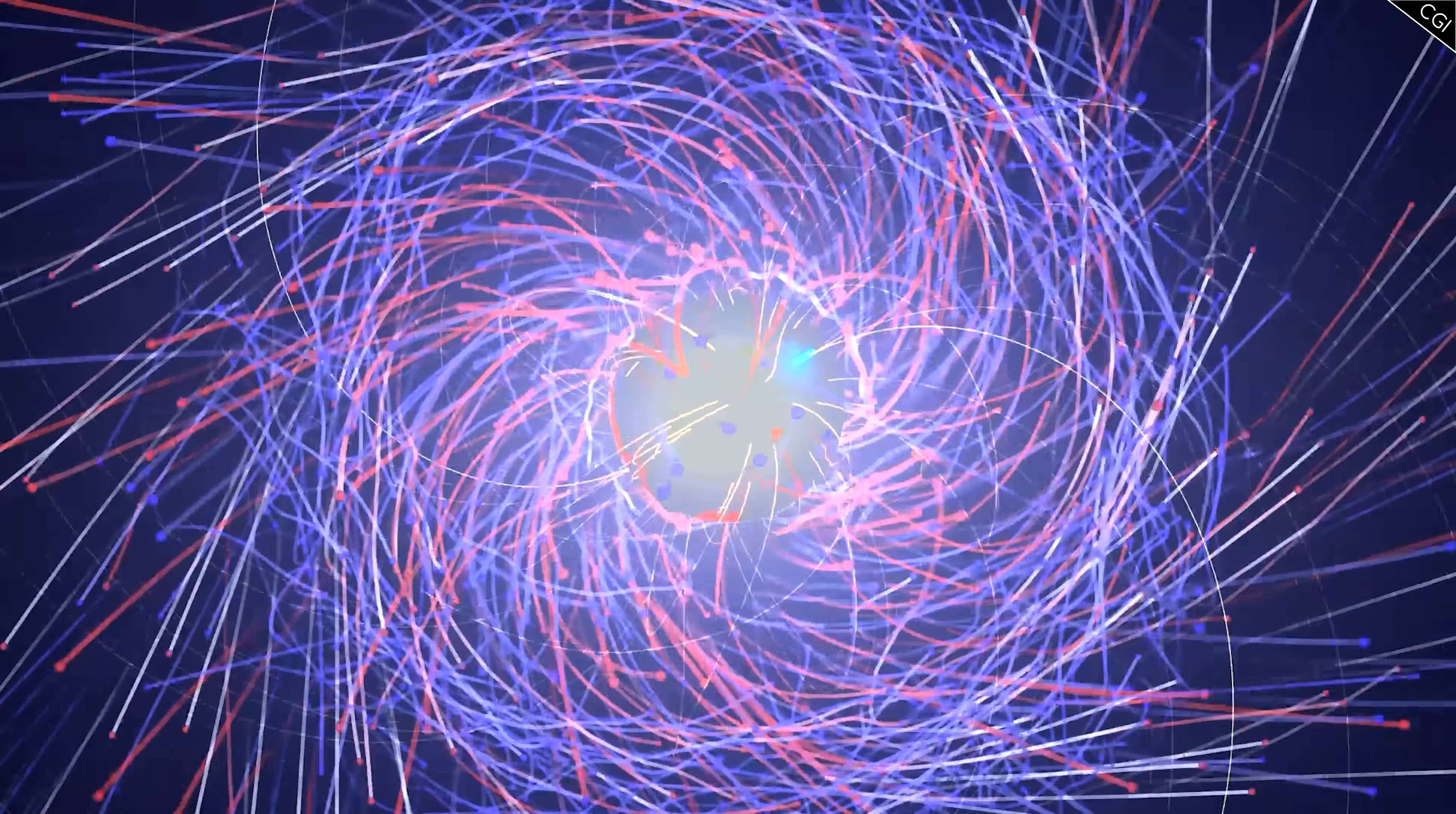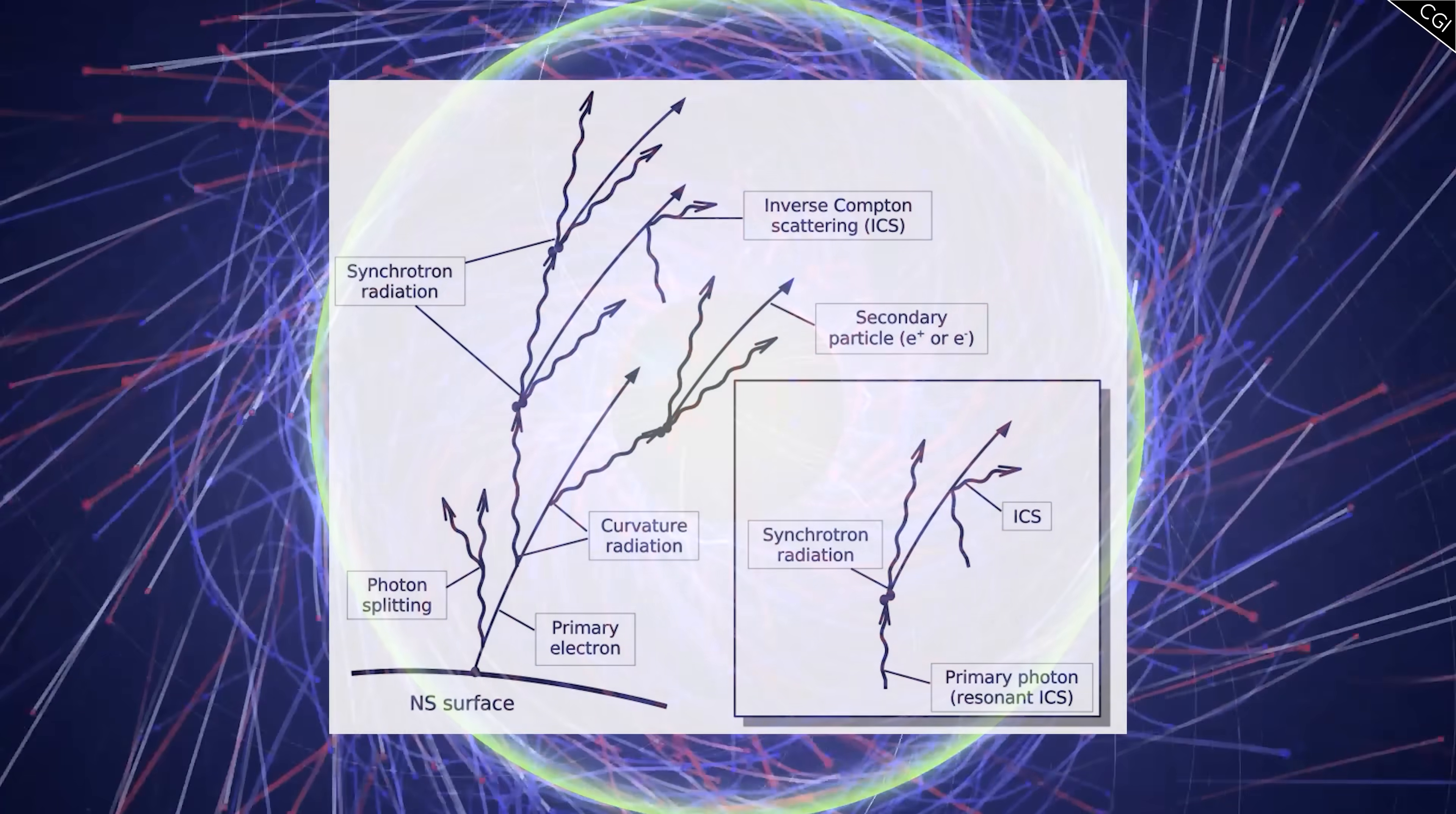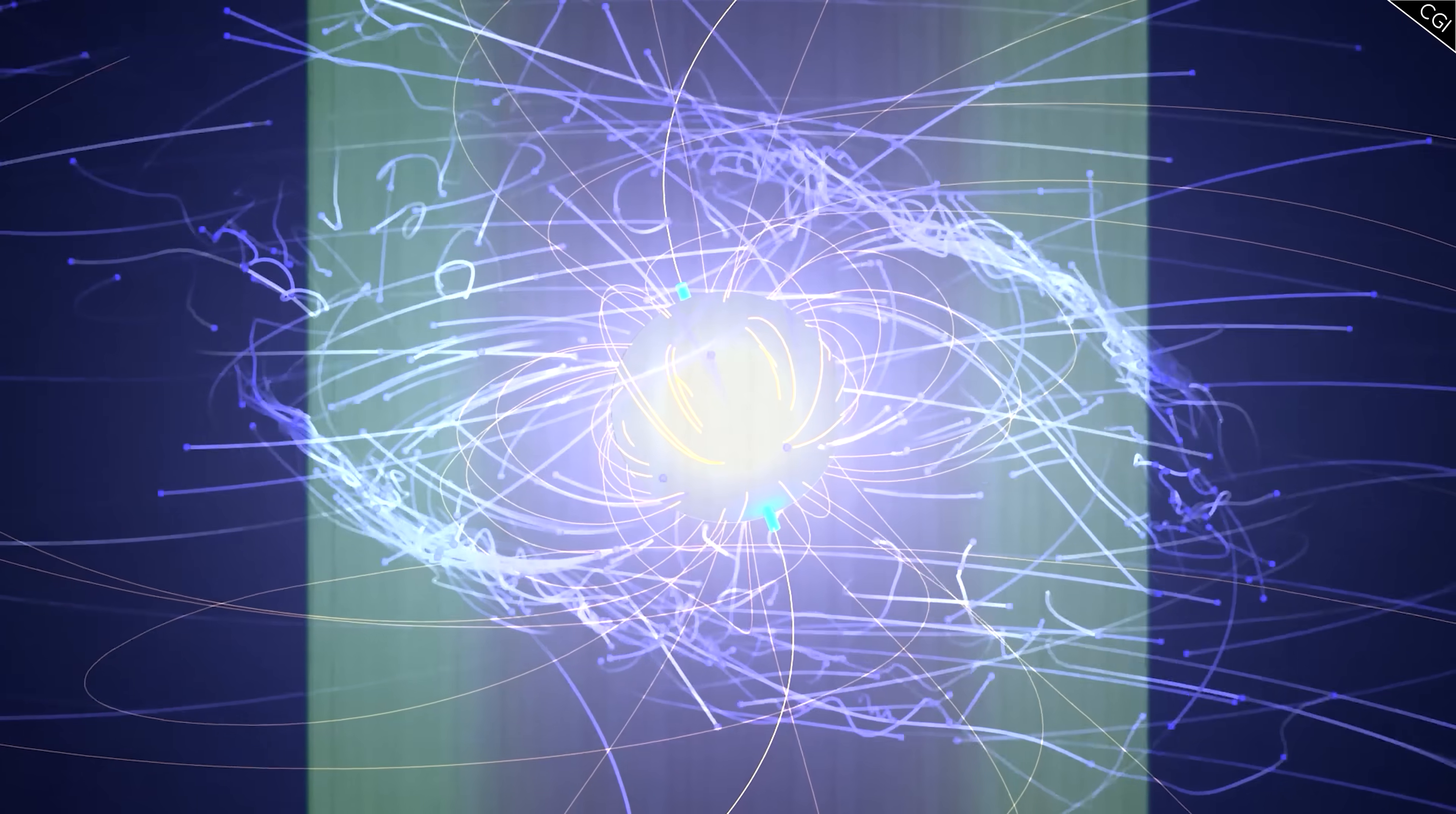These two synchrotron photons can each then produce another electron-positron pair after they reach the threshold angle between their momentum and the magnetic field lines. This process repeats again and again, exponentially increasing the amount of photons and electron-positron pairs created, until the synchrotron photons no longer have enough energy to create electron-positron pairs, putting an end to the cascade.